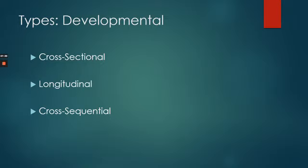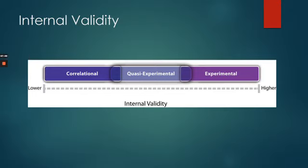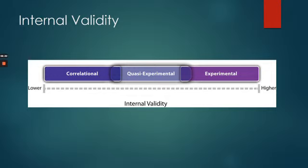Cross-sequential lacks the disadvantages of the other two designs except for costliness. In terms of non-experimental designs and validity issues, the big issue is internal validity. Experimental designs have high internal validity because you're controlling all other variables and only the IV is changing systematically. Non-experimental designs don't have that control because you're looking at things occurring in real life that you're not manipulating. So you'll generally have lower internal validity. In between is quasi-experimental, which we'll talk about in the next lecture.